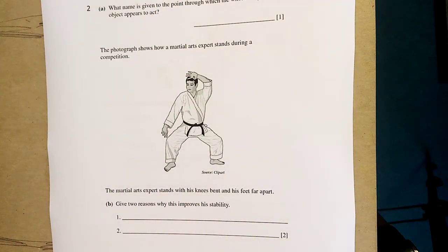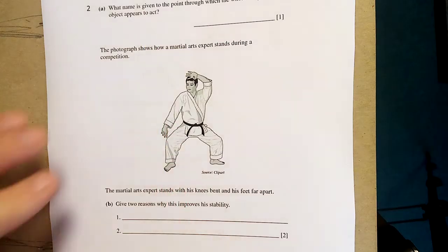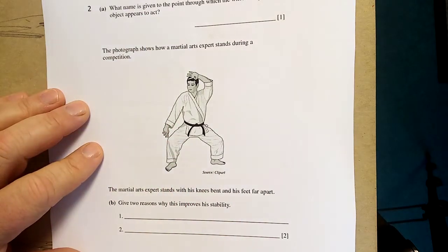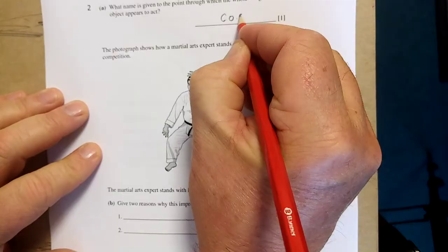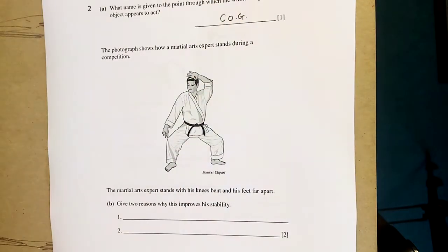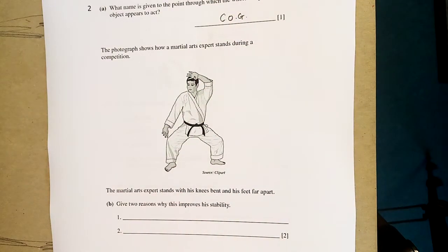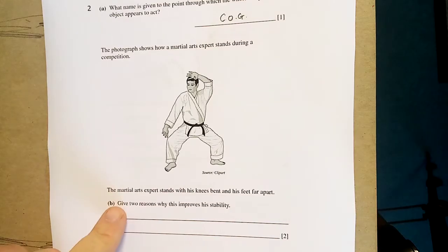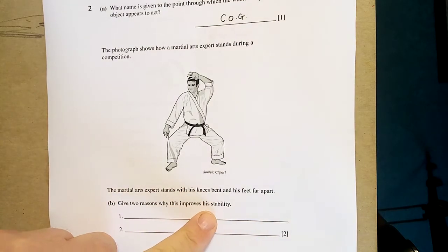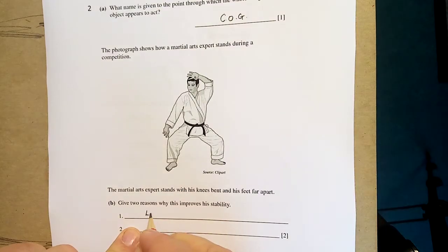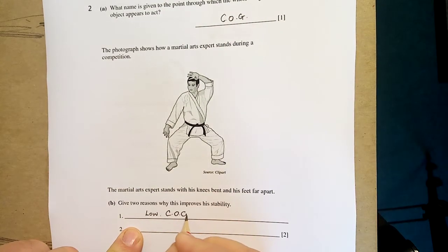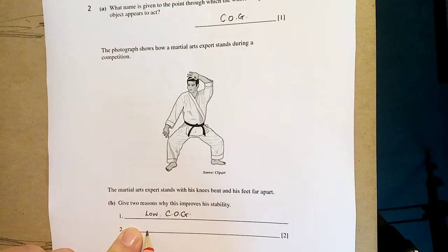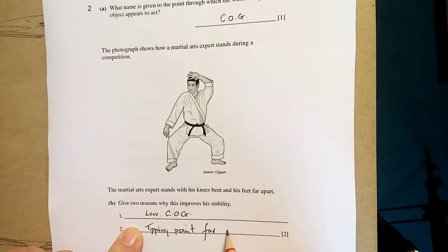Let's look at the next question. Here's the taekwondo question. What name is given to the point through which the whole weight of an object appears to act? COG - Centre of gravity. The photograph shows how a martial arts expert stands during a competition. Give two reasons. Low centre of gravity, low COG. Also, feet far apart for a wider base - the tipping point's far apart.